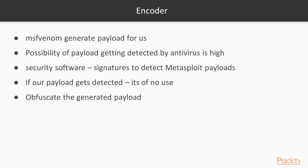What is an encoder? The MSF Venom utility generates a payload for us. However, the possibility of our payload getting detected by antivirus on the target system is quite high. Almost all industry-leading antivirus and security software programs have signatures to detect Metasploit payloads. If our payload gets detected, it would render useless and our exploit would fail. This is exactly where the encoder comes to the rescue. The job of the encoder is to obfuscate the generated payload in such a way that it doesn't get detected by antivirus or similar security software programs.